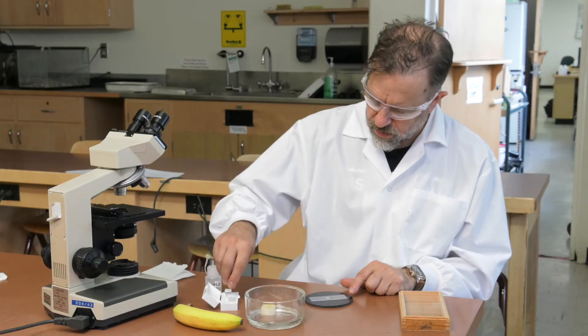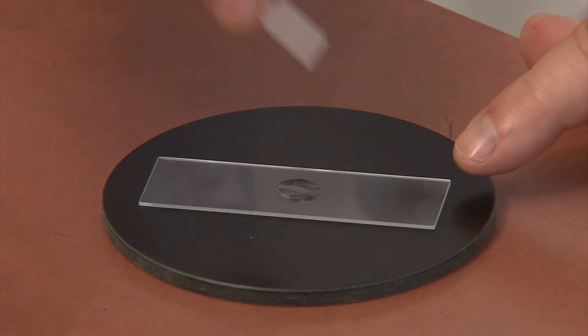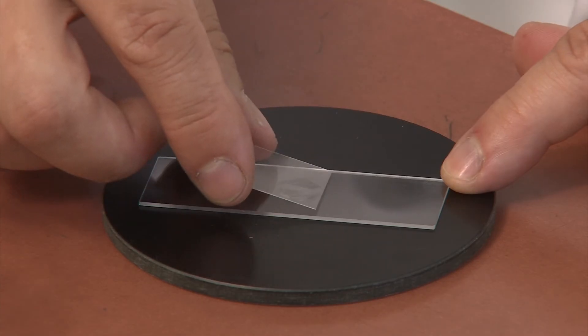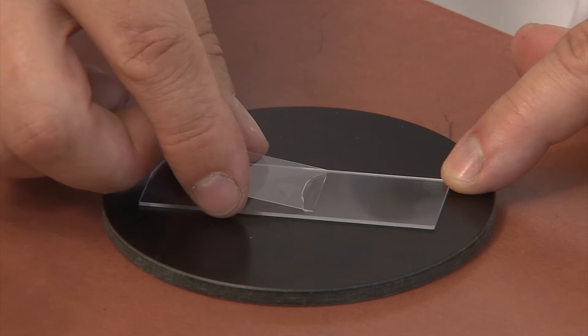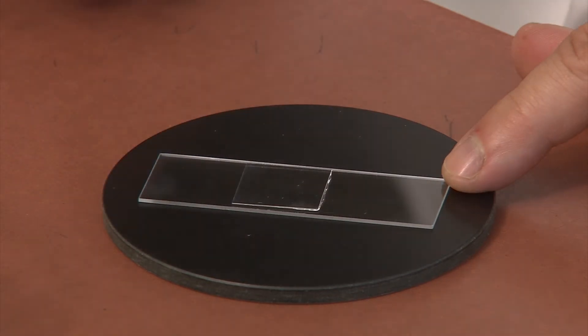Carefully apply a cover slip. Scan your slide under the four times objective. You should not have large masses of banana tissue. Since these cells are transparent, you will need to close the iris diaphragm by moving the adjustment lever to the right.